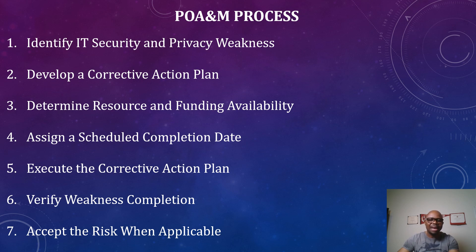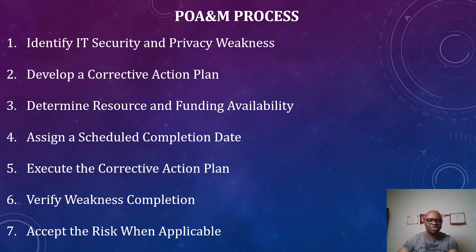Step three: determine resources and funding availability. There must be at least a point of contact who is responsible for remediating that weakness, and you also determine how much it is going to cost to fix that weakness. That is the job of the system owner or the common control provider. Someone should be responsible for remediating that risk, and there must be funding to ensure that the finding is remediated.